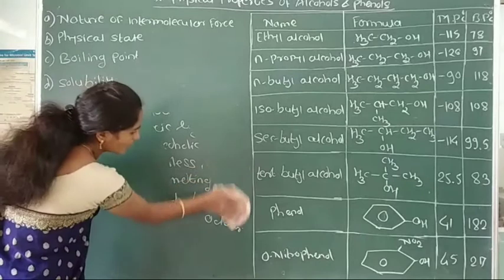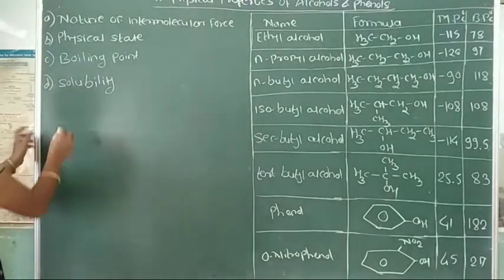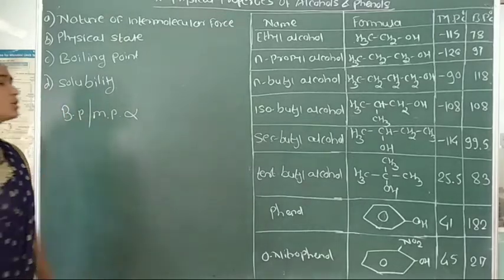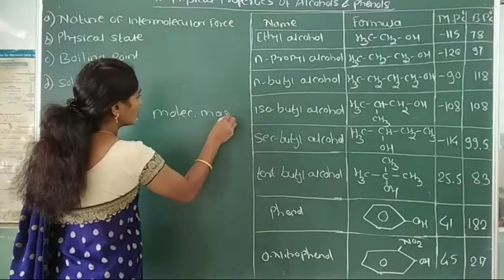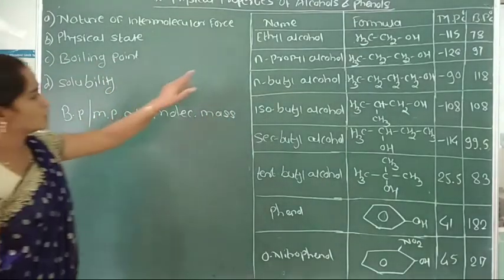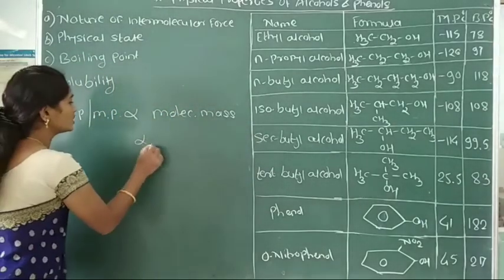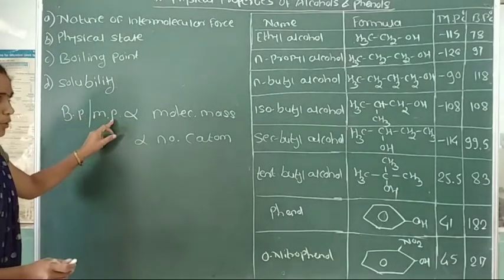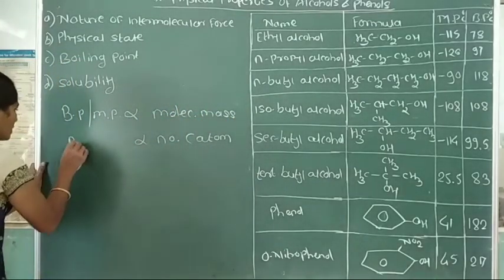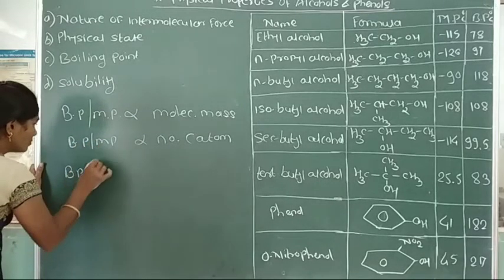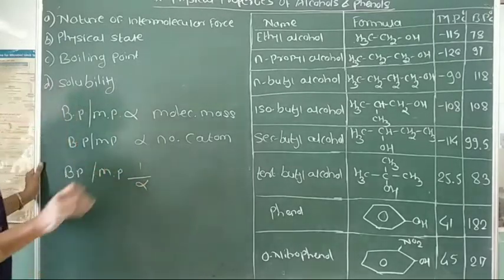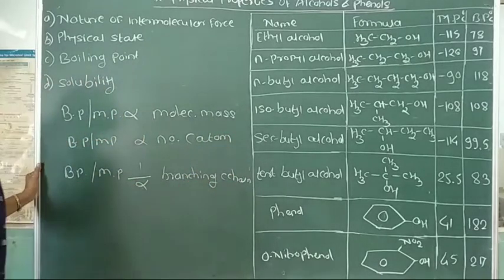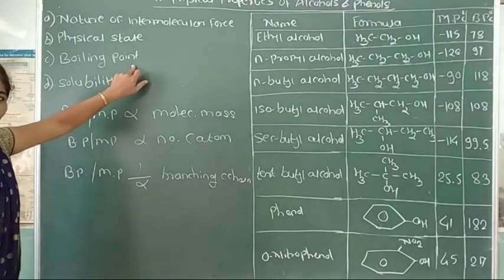The next physical property is boiling point and melting point of alcohols and phenols. Boiling point and melting point of alcohols and phenols are increased with increasing molecular mass or with increasing number of carbon atoms. But melting point and boiling point of alcohols and phenols decrease with increasing branching of the carbon chain.